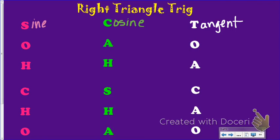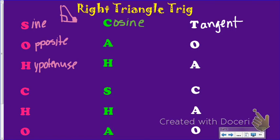So for example, SOH for SOHCAHTOA helped me remember the sine ratio. The sine ratio means that the sine of an angle is equivalent to the opposite side over the hypotenuse. So if I had a right triangle with an angle over here, and I was taking the sine of that angle, it would be my opposite side over my hypotenuse — and no matter what the numbers were, it would always be in that ratio.